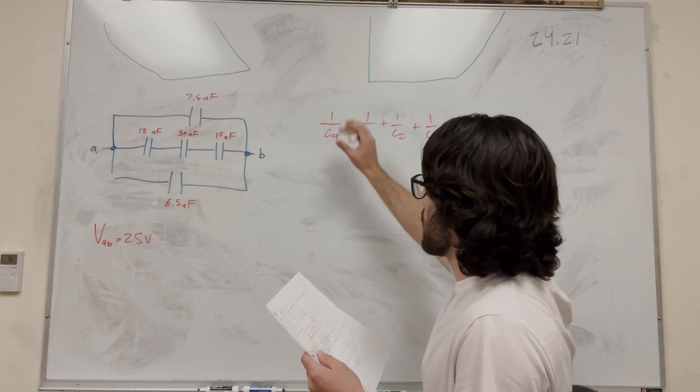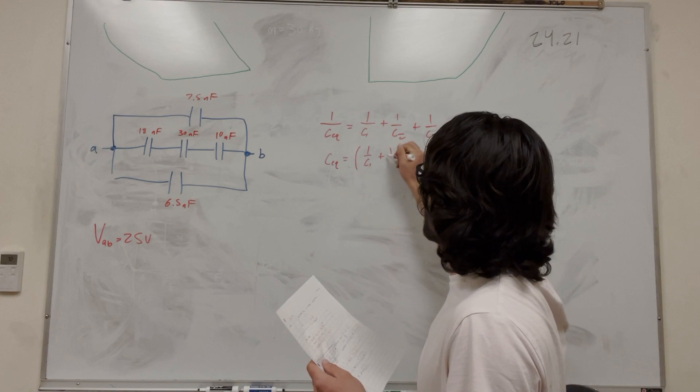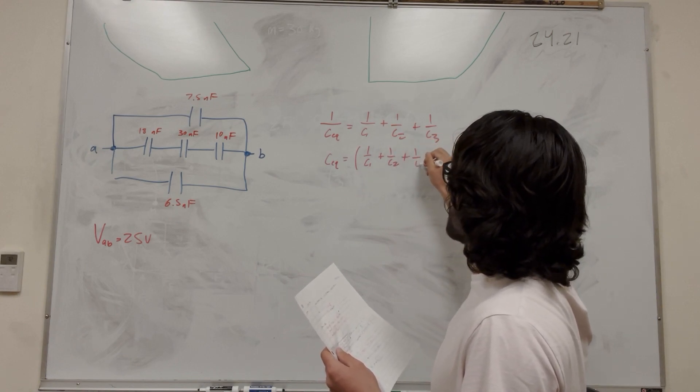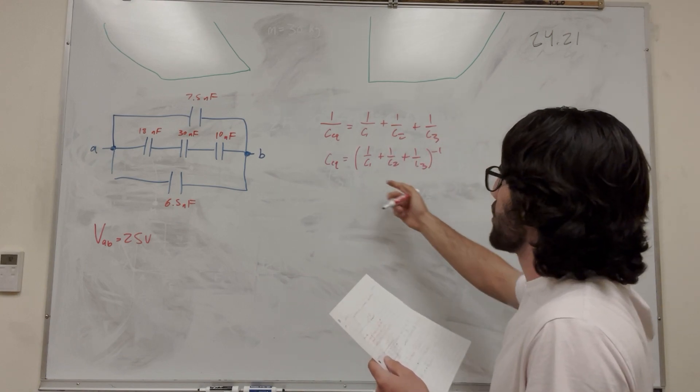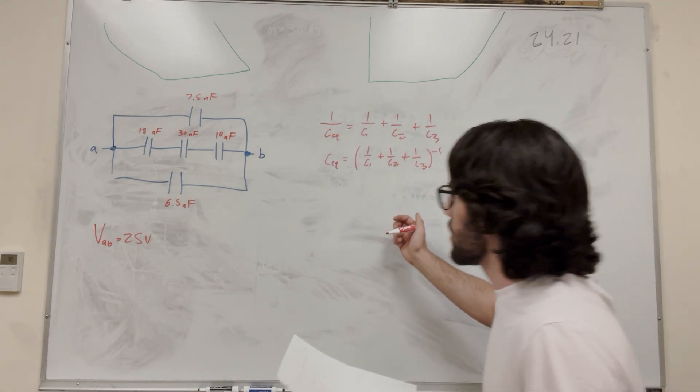So what I'm going to do is I'm going to take the inverse, so it's going to be C_eq is equal to 1 over C1 plus 1 over C2 plus 1 over C3, and then multiply that all by negative 1. So I just took the inverse of both sides to get this like this. So let's just do this now.